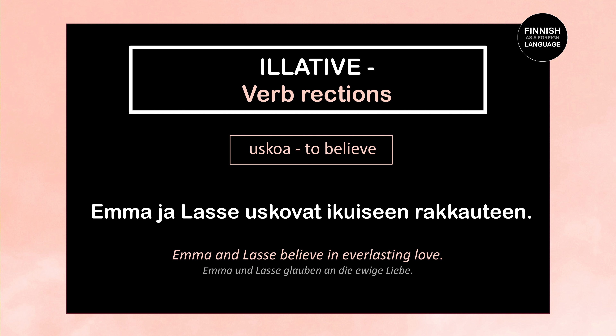Next verb: uskoa, meaning to believe. Emma ja Lasse uskovat ikuiseen rakkauteen — Emma and Lasse believe in everlasting love. Uskovat is the third person plural present tense of uskoa. Ikuiseen and rakkauteen are the illative forms of ikuinen (everlasting) and rakkaus (love). We use the illative because of the verb uskoa.